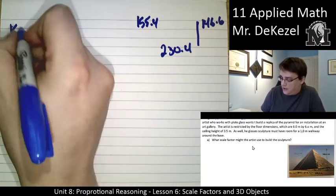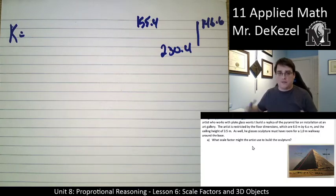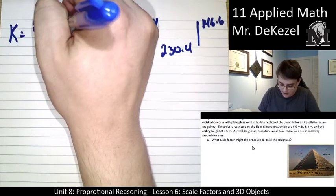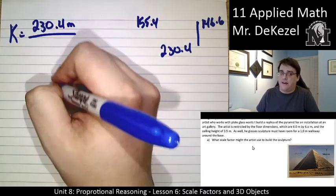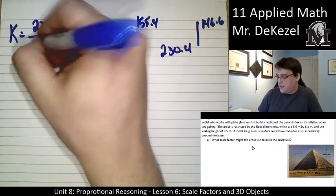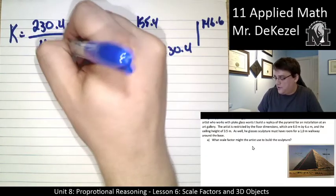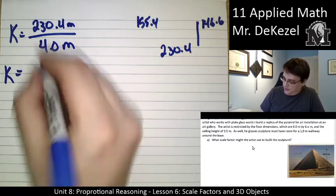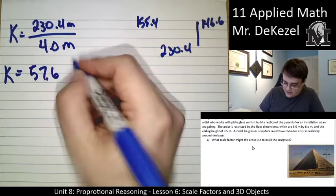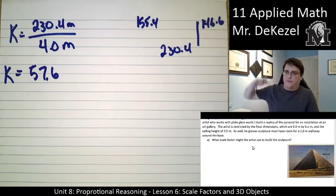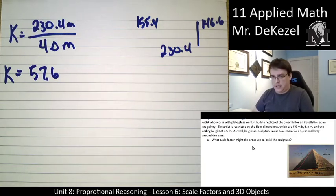So, if I had my scale factor, the original base length is 230.4 meters. And I know that I have 4 meters to work with. I have to have a meter on each side, so it can be a max of 4 meters. So, if I used a scale factor of this, which would be 57.6, I know that would work for the base, but would that work for the height? We need to fit it in under 3.5 meters.